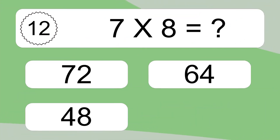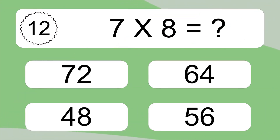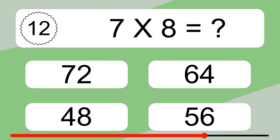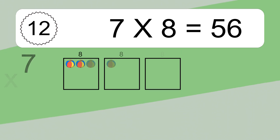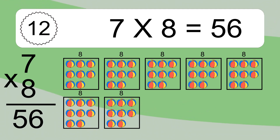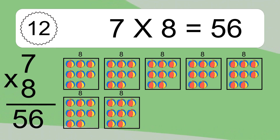7 times 8 equals what? 7 times 8 equals 56. We have 7 boxes, and each box has 8 colorful balls inside. If you count all the balls in all the boxes together, you will have 7 times 8 balls. This equals 56 balls.